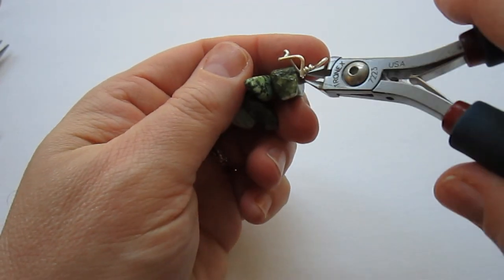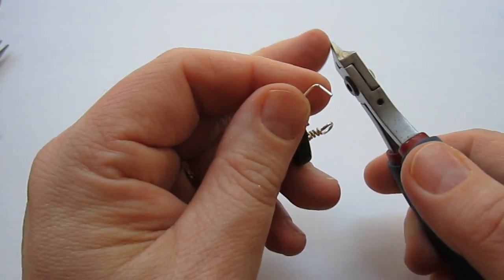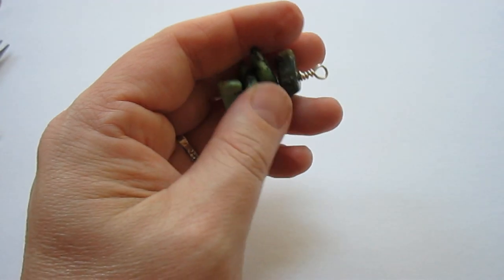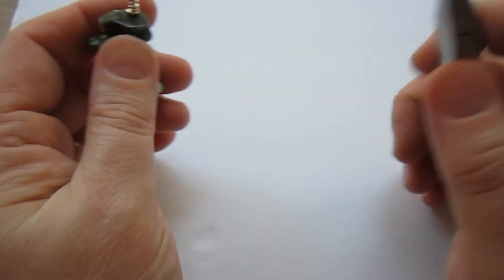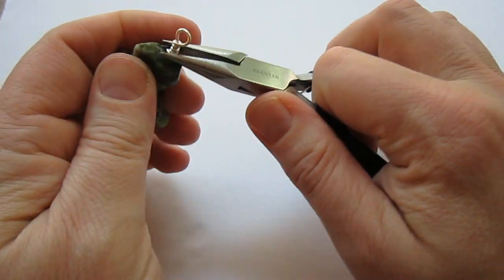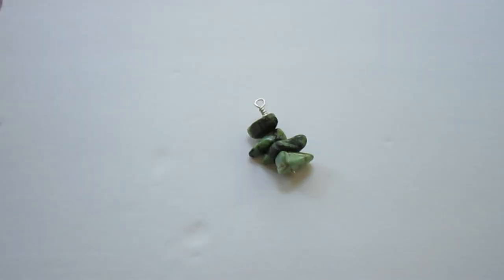And then we're just going to cut off the excess, making a flush cut. So you're just using the back or the flat part of the wire cutters toward what you're leaving behind. And then I'm going to go back with my chain nose pliers and just make sure the end is not poking out. And there we have it.